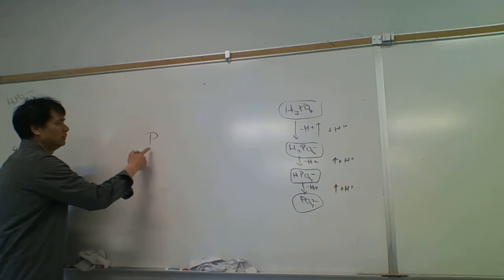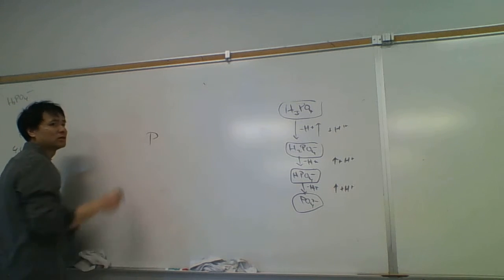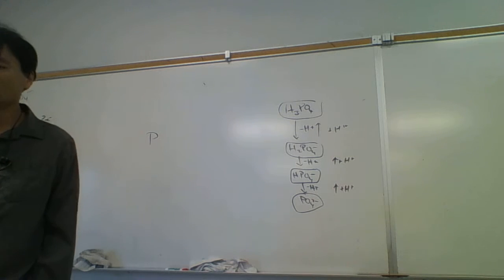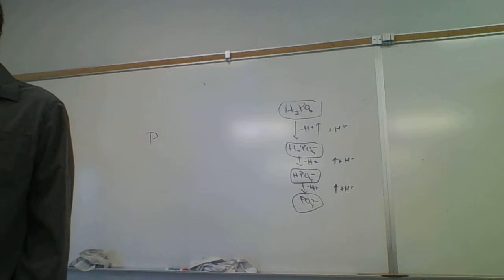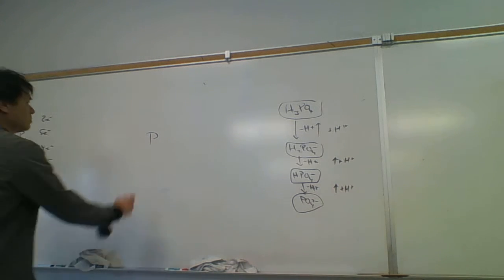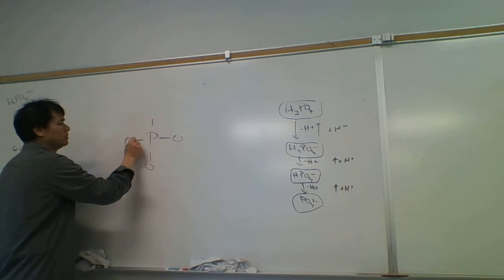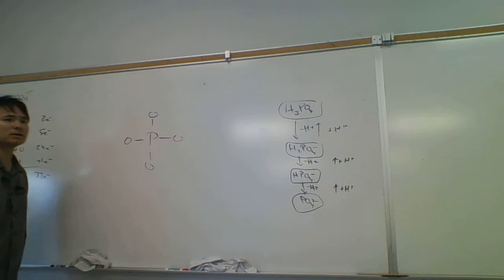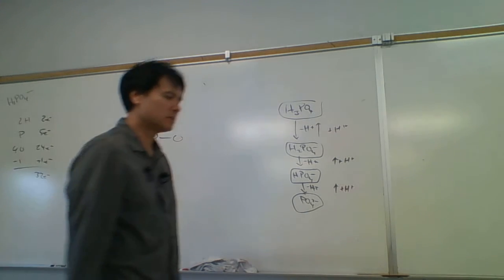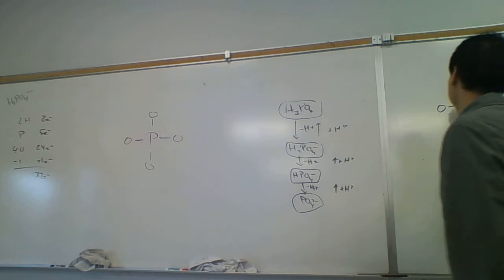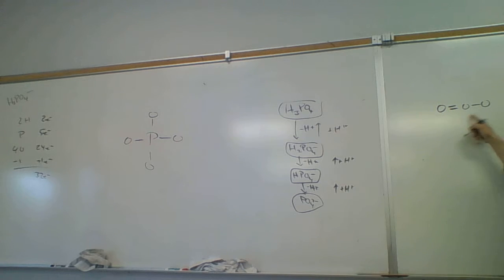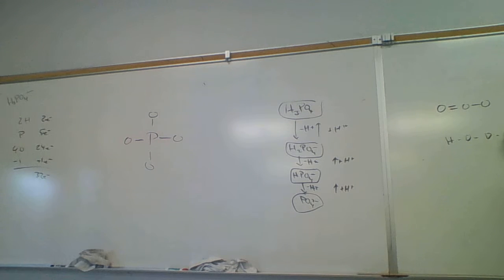We want to avoid oxygen-oxygen links if possible. The reason we try to avoid them is because they're typically unstable. Sometimes they're unavoidable — like in ozone or hydrogen peroxide, there's no choice — but ozone is also very reactive.